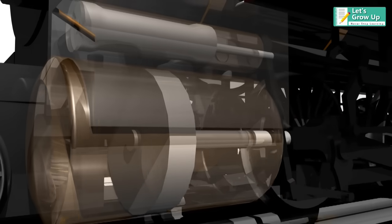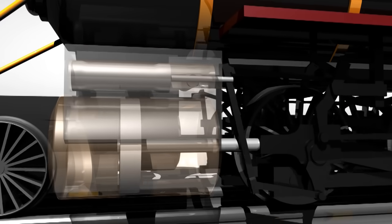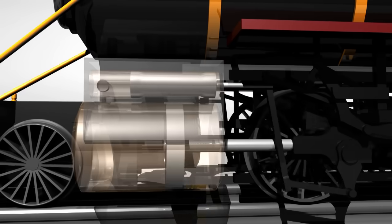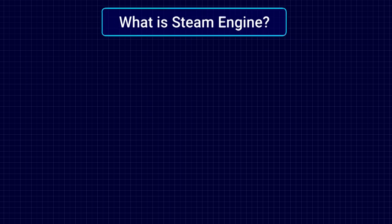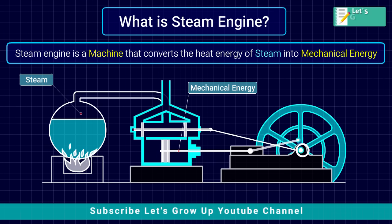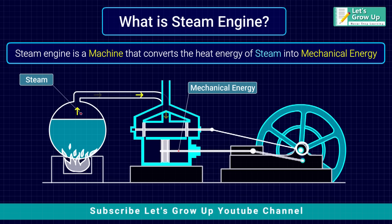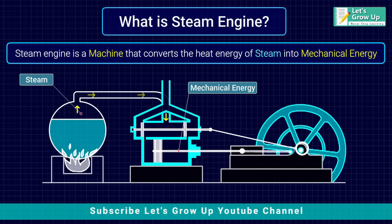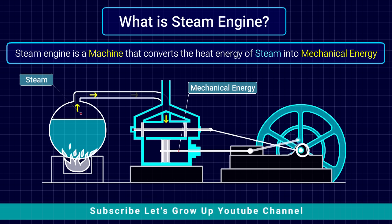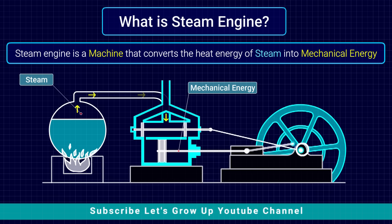Today, we learn the working function of a steam locomotive engine. But before going into the main topic, we will know what a steam engine is. A steam engine is a machine that converts the heat energy of steam into mechanical energy. A steam engine passes its steam into a cylinder where steam pushes a piston back and forth, and it is with this piston movement that the engine can do mechanical work.